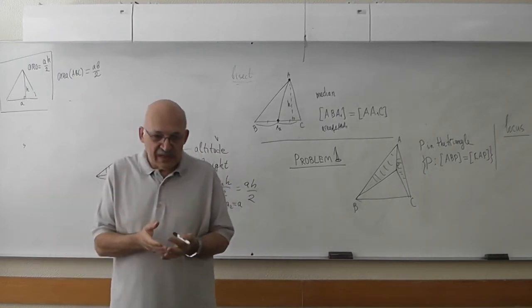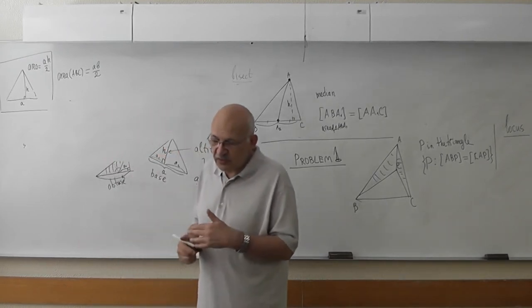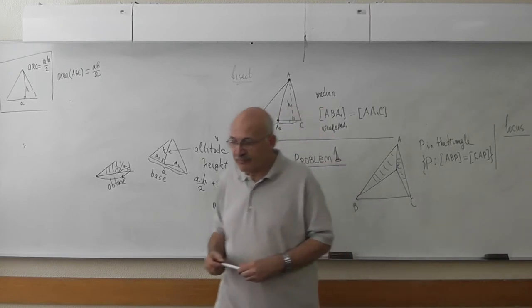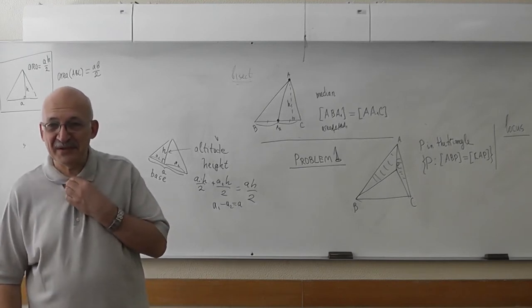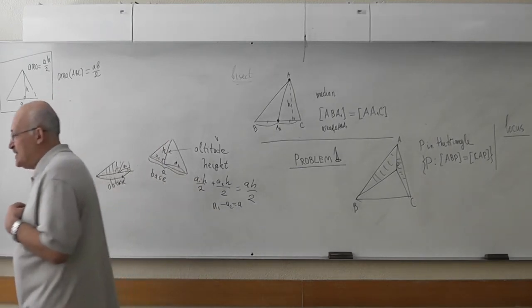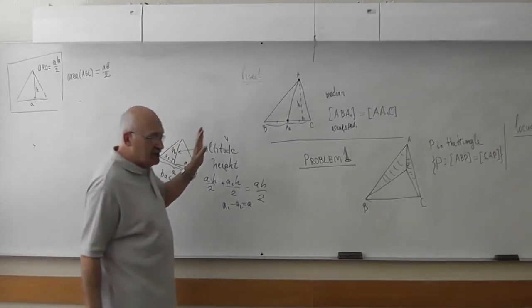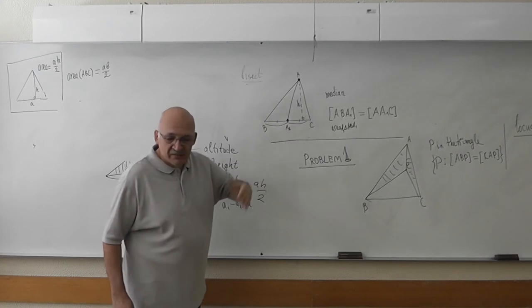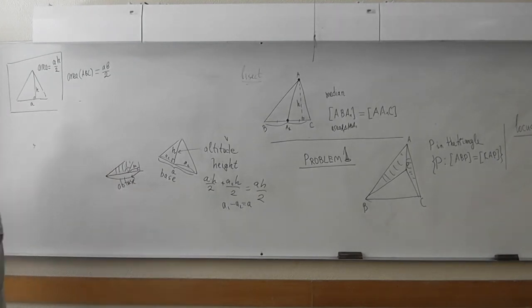In English we use bisection not only for angles, but you can bisect the area, or bisect the segment. So again, use only the fact - only this fact. Try to use only this, that the median bisects the area.